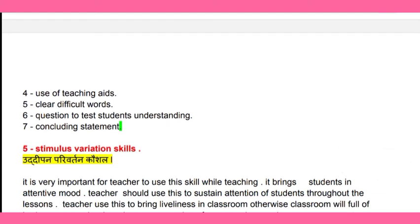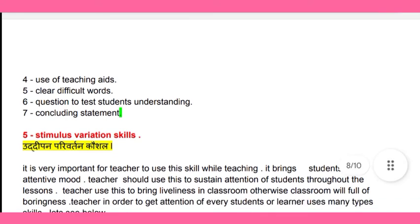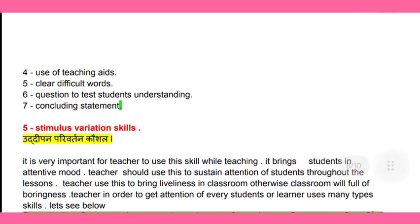The last component is a concluding statement — after explaining the topic, the teacher has to tell students what they learned today, for example 'today we have learned about the water cycle' or 'today we learned about photosynthesis'. In the next video we will see stimulus variation skill in part two. If you need the PDF, please comment 'yes' in the comment section below. Bye bye, take care.